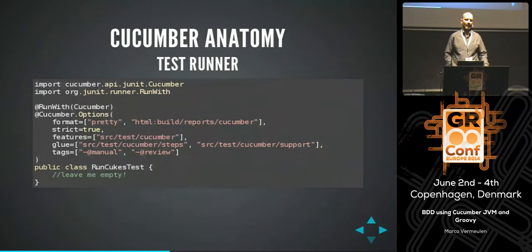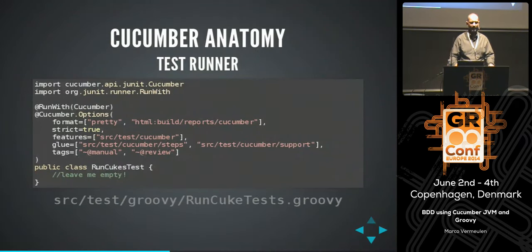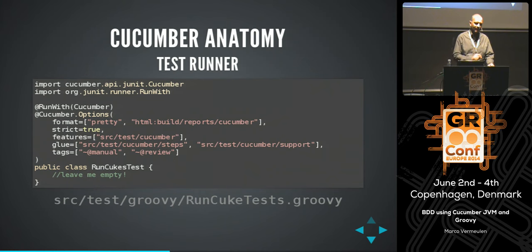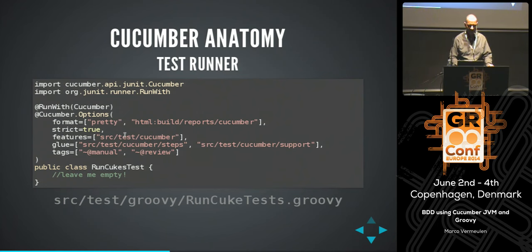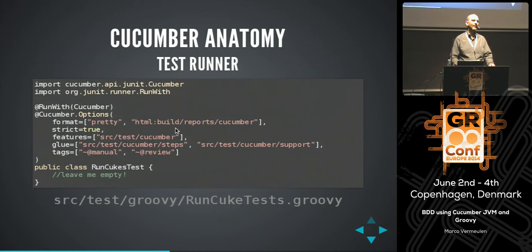You need a test runner — literally an empty class that sits in your test folder, annotated with @RunWith(Cucumber). You've got a bunch of CucumberOptions — an annotation that configures Cucumber at runtime, telling it where your features lie, where it'll find step definitions, and defining tags and HTML output.